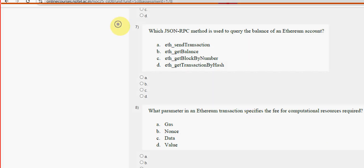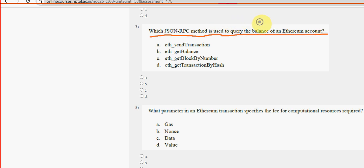Seventh question: which JSON RPC method is used to query the balance of an Ethereum account? For the seventh question, option B is the probable solution — eth_getBalance.